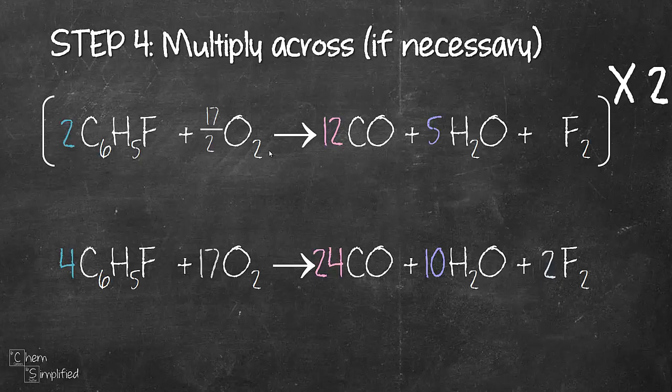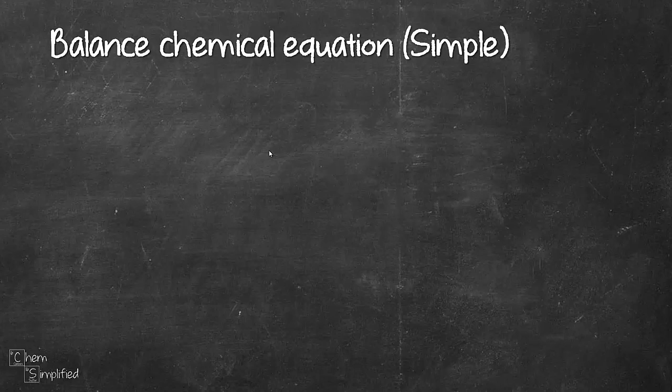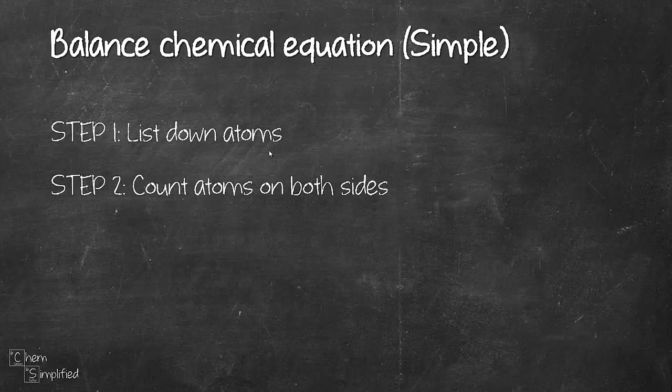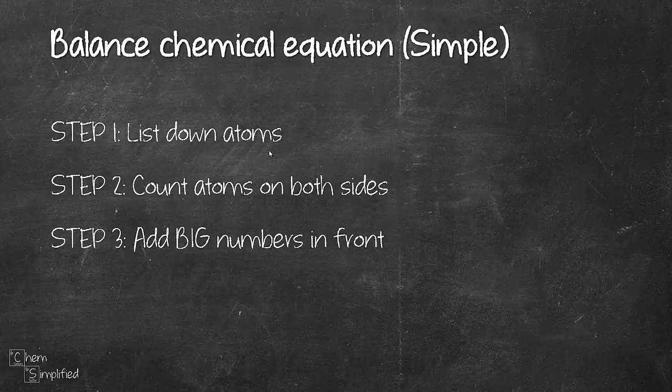Let's recap on the four steps that we used to balance the equation using this simple method. We first started off by listing down all the atoms that are involved in the equation. Then we counted the atoms on both sides. After that, we added big numbers in front of the terms and we kept updating the atom counts on both sides until they are all the same. And because we had fractions in one of the terms, we had to multiply 2 across the entire equation. The number that you need to multiply will depend on the number on the bottom of the fraction, which is the denominator.